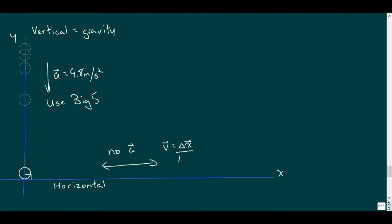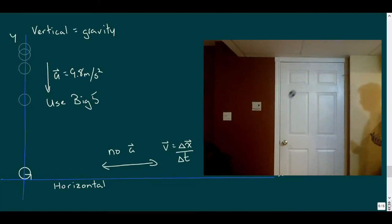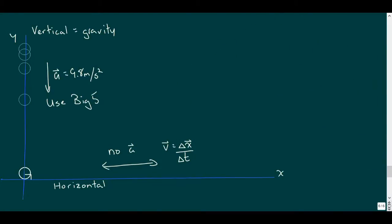And if there's no acceleration in our horizontal or x direction, when we analyze this motion, it should be uniform. Well, let's look at this roll of tape being tossed in a non-vertical direction, and see if we can't use some of our kinematics knowledge to determine its launch velocity.